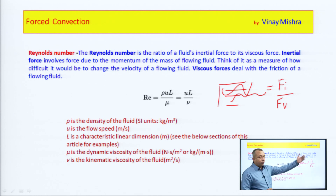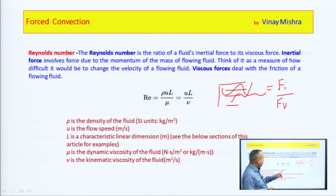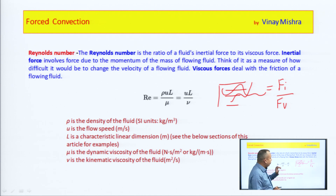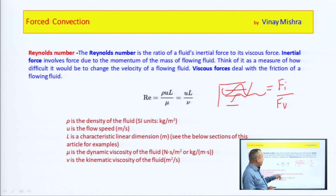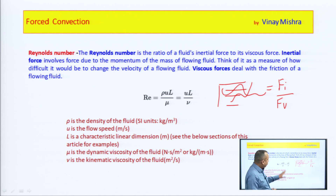If we elaborate the inertia force and viscous force, we get the equation. Finally, Reynolds number equals rho times u times L divided by mu, where rho is the density of the fluid, u is the velocity of the fluid, L is the characteristic length, and mu is the dynamic viscosity of the fluid.